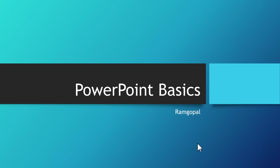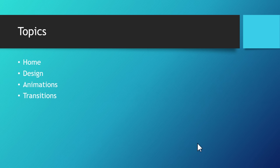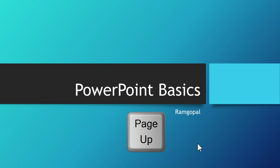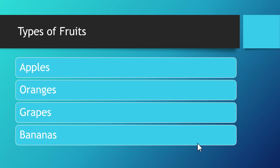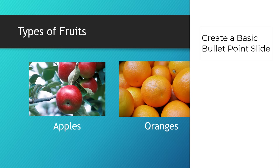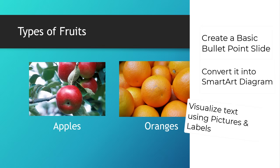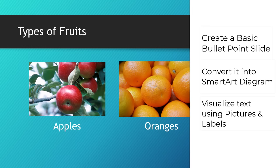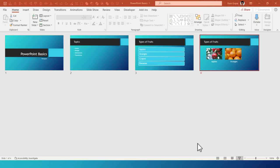Let me use the simplest option which is to hit Enter. That takes me to the next slide. To go back to the previous slide, I can hit Page Up. So let me hit Enter — here is the second slide, the next slide, and the next slide. Now you know how to create a basic bullet point slide, how to convert that into a simple diagram using SmartArt, and how to visualize your slide using pictures and labels. At this point, you know more about PowerPoint than most people. Now to come out of this slide show, you hit Escape. To go to a specific slide, you double click on the slide and that takes you to the normal view.